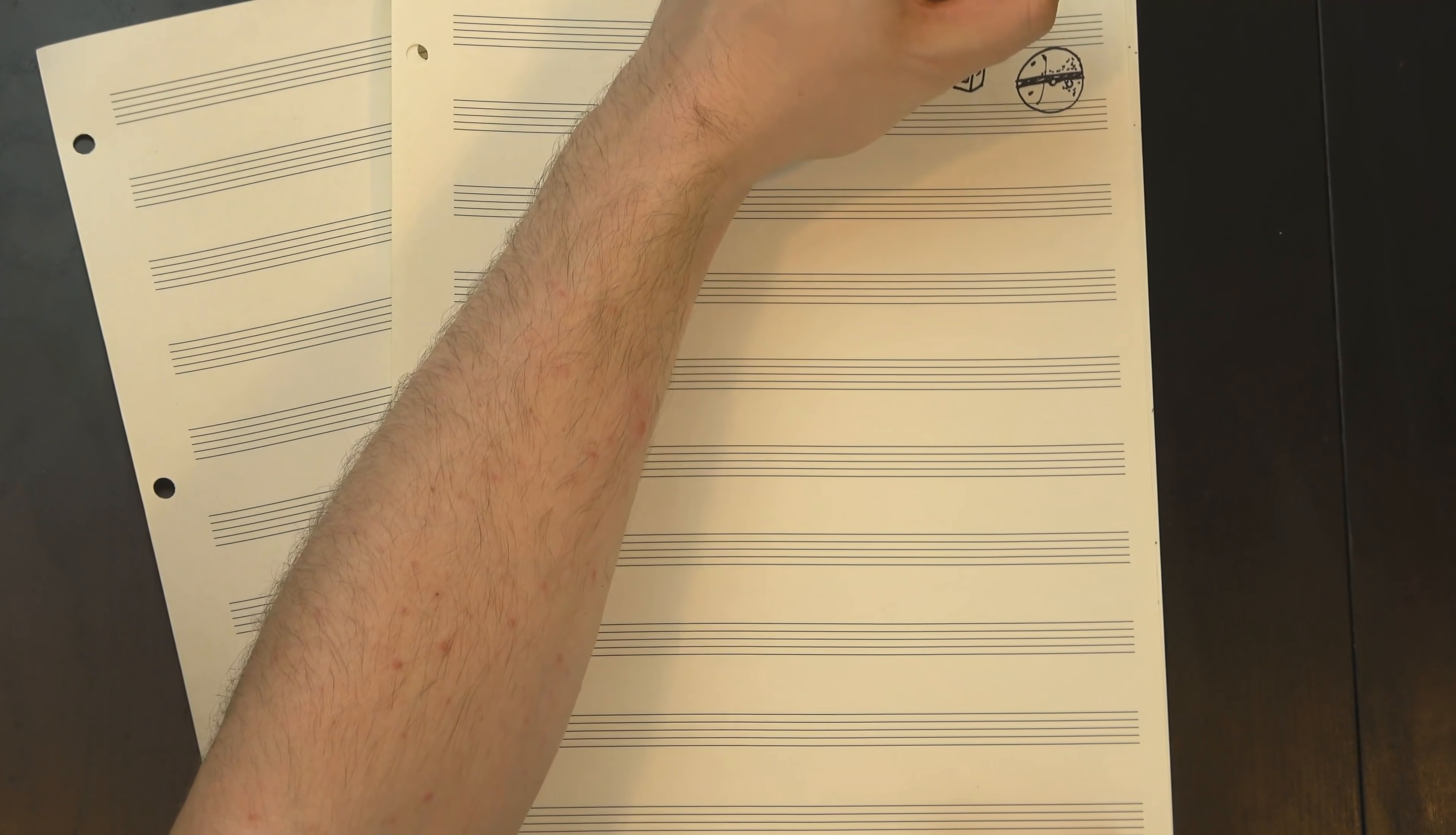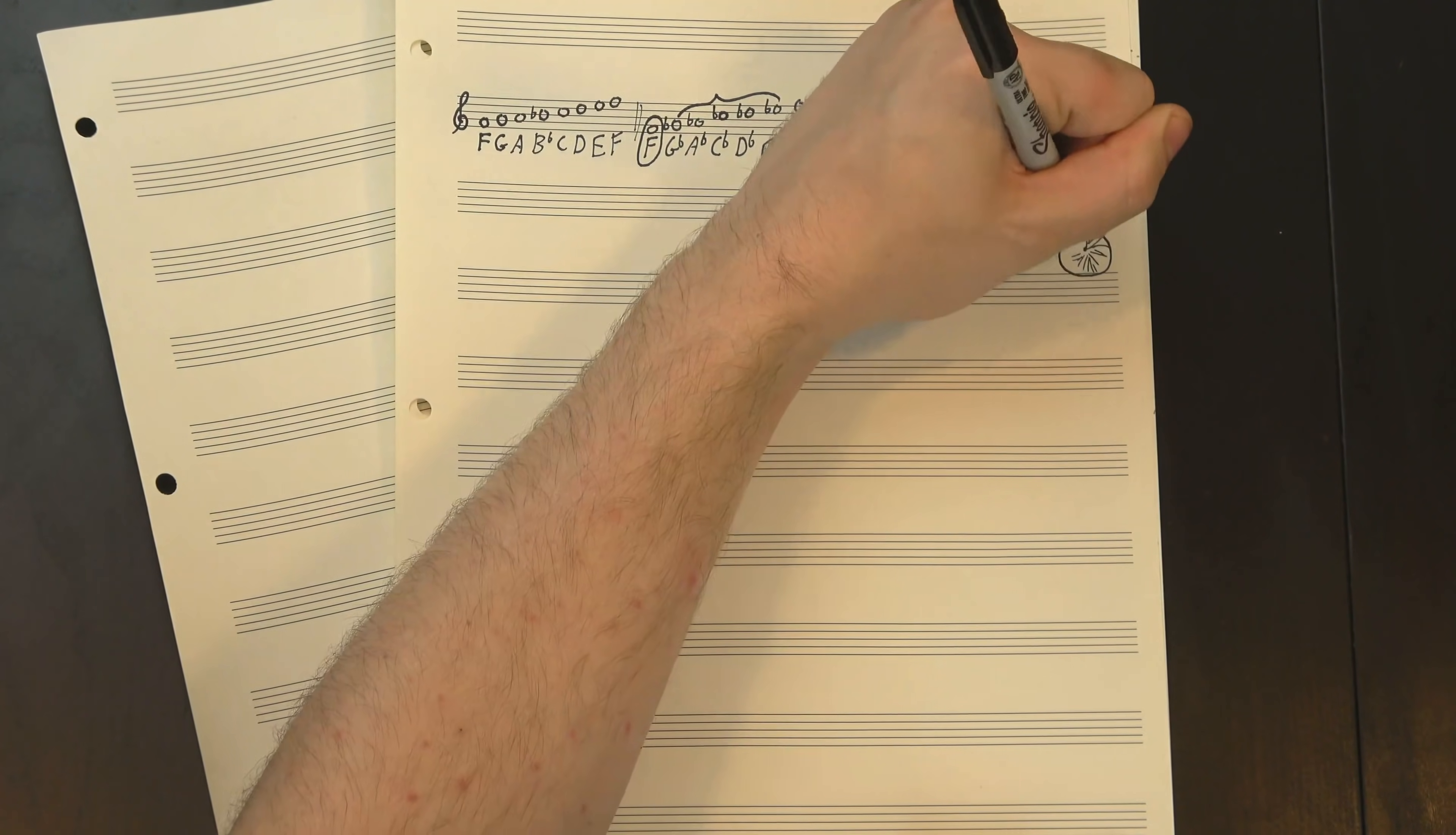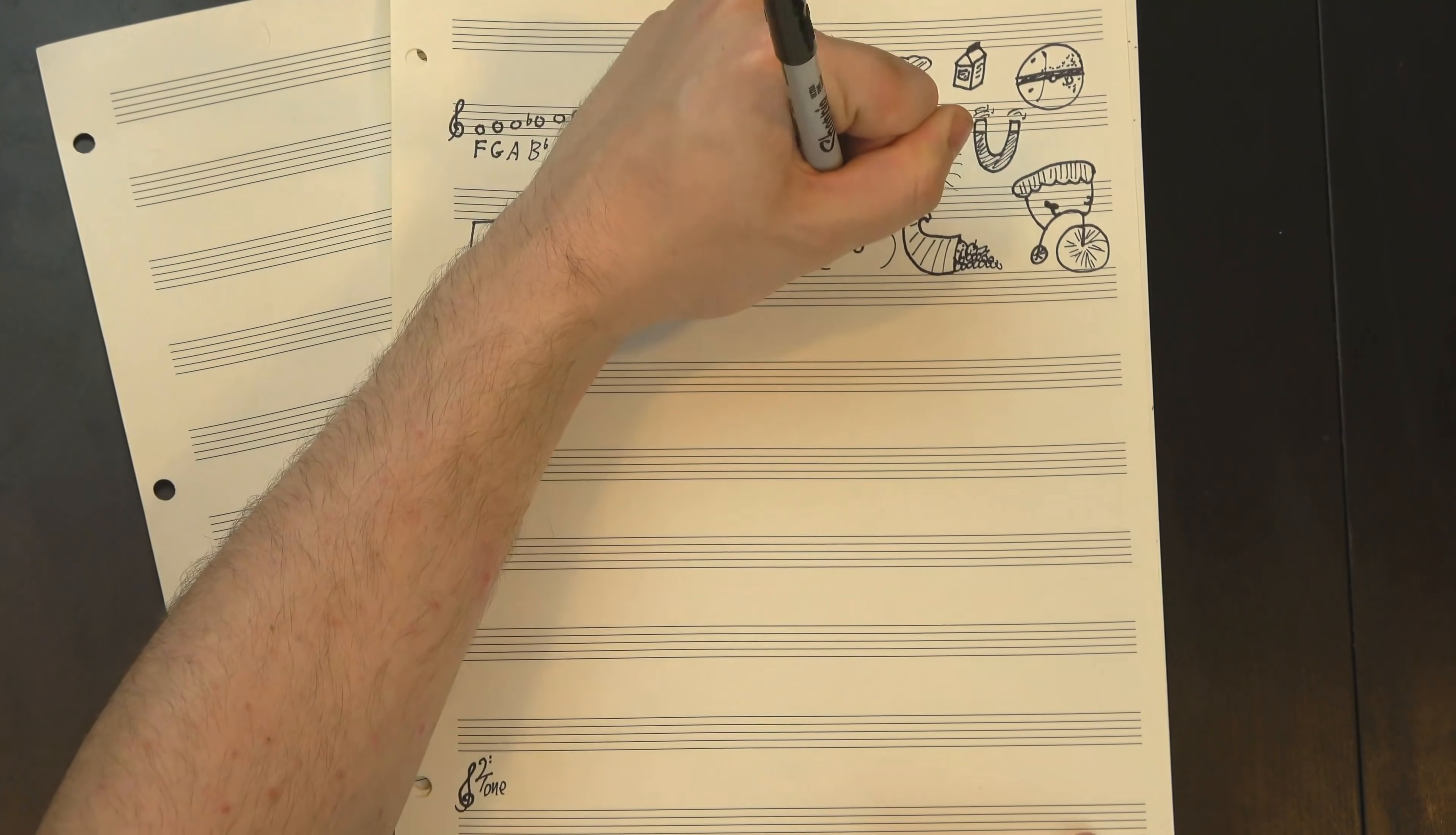Instead of just being all the notes missing from the parent scale, an antiscale is all those notes but played over the same root, so F-major would flip into this. These five notes form the complement, but we've held onto the F as well, giving us a six-note scale that's the unique polar opposite of the seven-note scale we started with. The process is no longer modally invariant. Every antiscale is different. So what can we do with this?